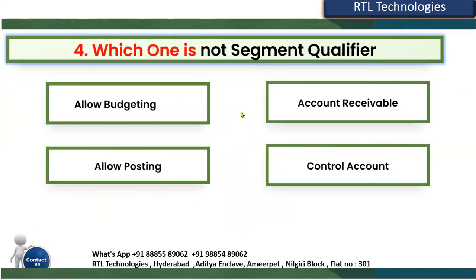The fourth question: which one is NOT a segment qualifier? Segment qualifiers are very important when working with the value set for your accounting segment during value entry. The options are: allow budgeting, allow posting, account receivable, or control account. Allow budgeting is a segment qualifier, allow posting is a segment qualifier, and control account is also a segment qualifier. Account receivable is NOT a segment qualifier.